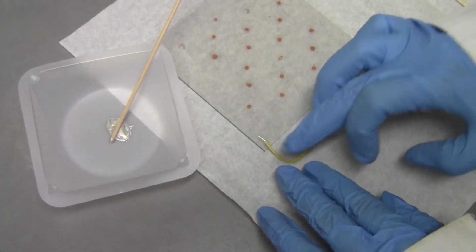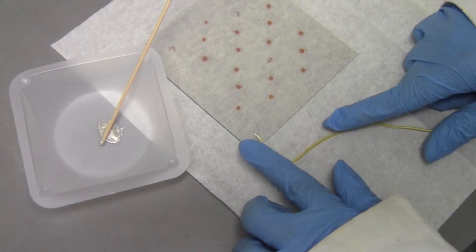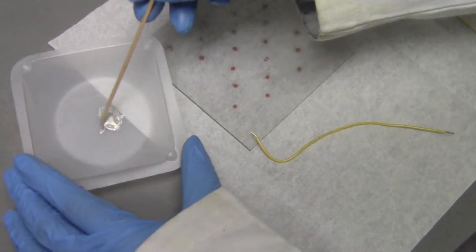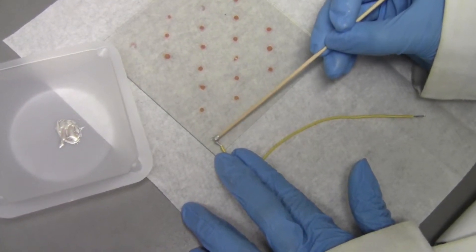Lay the wire flat onto the plate on the conductive side and coat the exposed wire with the silver epoxy.